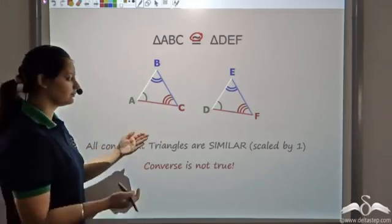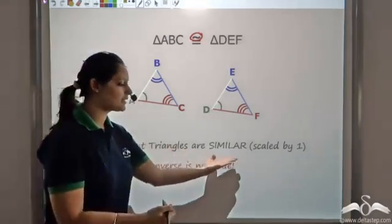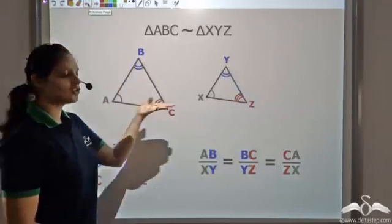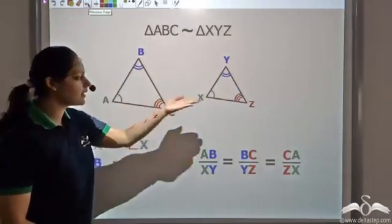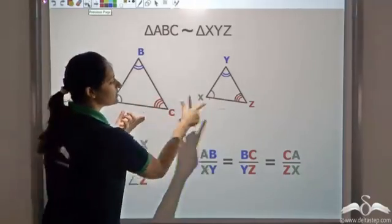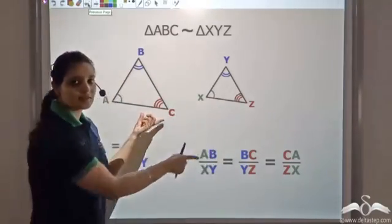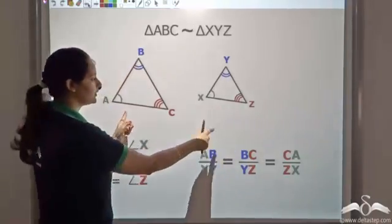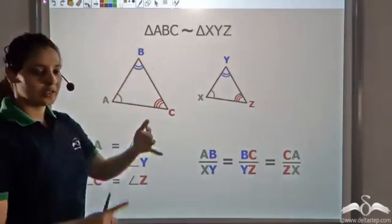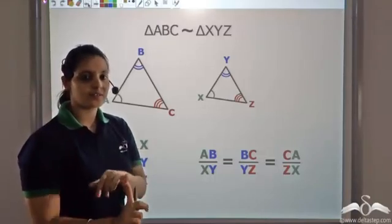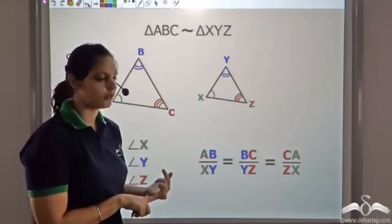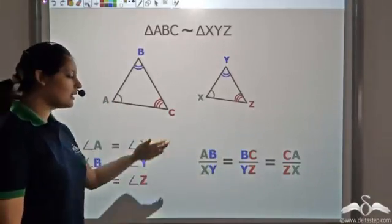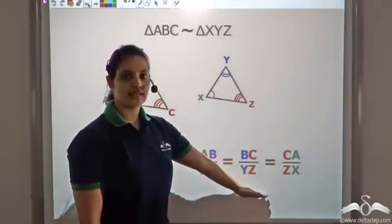But what about the converse? The converse is not true. Can I say that when triangles are similar, they will be congruent? We've just seen that these two triangles are similar — can I say they are congruent? No, because there is a difference in size. For congruency you need the same size also. So these are similar but not congruent. If congruent, then always similar; if similar, not necessarily congruent.